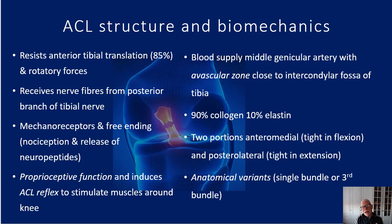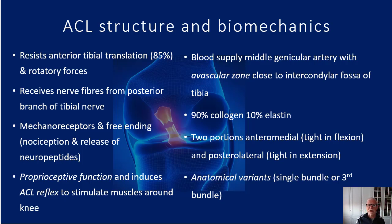The anterior cruciate ligament resists tibial movement — specifically anterior translation of the tibia on the femur — but it only resists about 85% of that anterior translation, so it's not the only structure that resists it. It is a neural structure with nerve fibres from the posterior branch of the tibial nerve, giving it the ability to enhance proprioception. It has mechanoreceptors within it, such as Ruffini corpuscles.